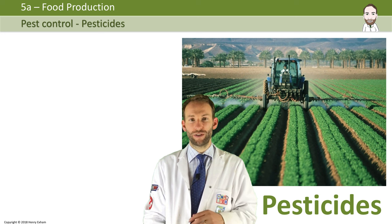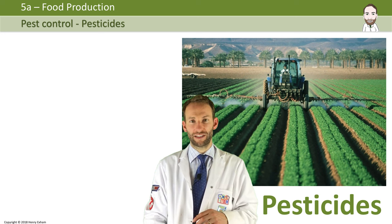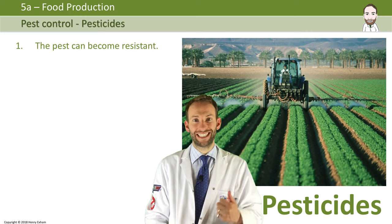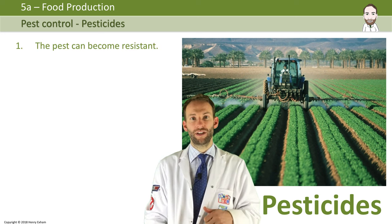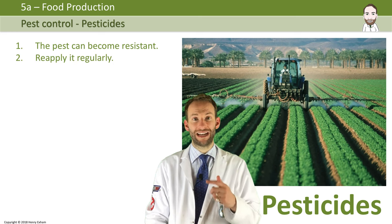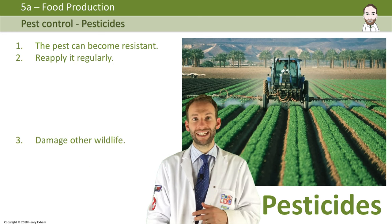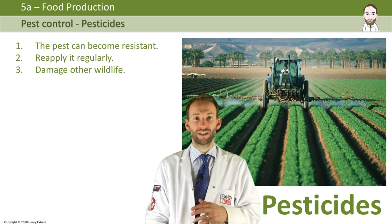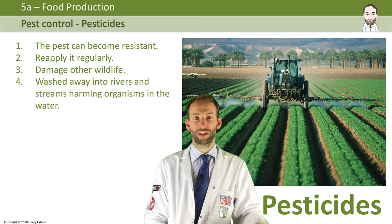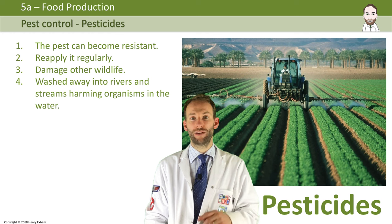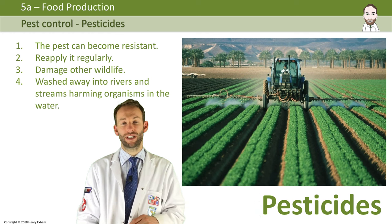However, there are issues with using pesticides. One, pests can actually evolve resistance to them. Number two, you have to reapply them really regularly. Number three, it can damage other wildlife other than the pest. Number four, they could be washed away into rivers and streams and harm other organisms in the water.